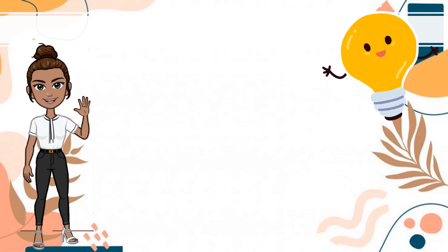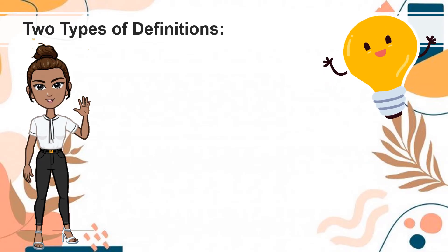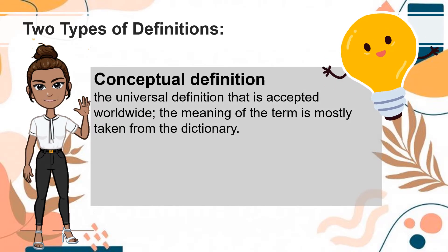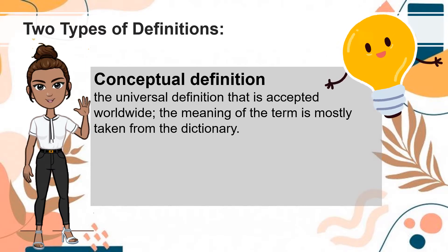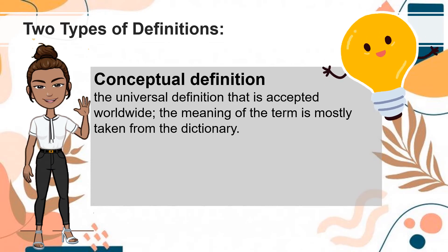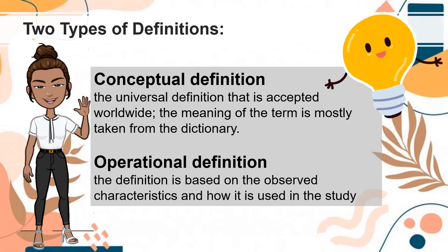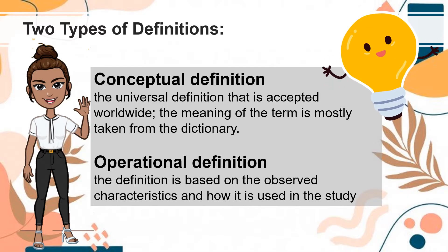An important part of writing a research paper is to give definitions of key terms. There are two types of definitions. Conceptual definition is the universal definition that is accepted worldwide. Additionally, the meaning of the term is mostly taken from the dictionary. The second type of definition is the operational definition, where the definition is based on the observed characteristics and how it is used in the study.